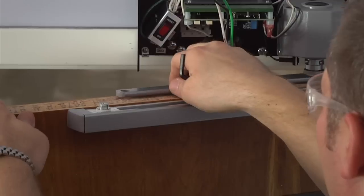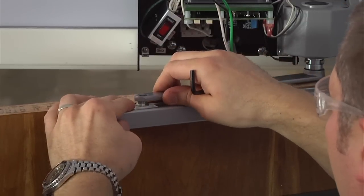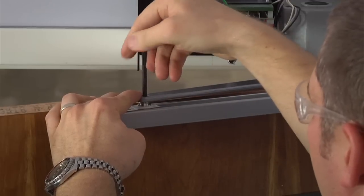Next, attach the arm to the track slider using the allen wrench. Turn this screw counterclockwise to tighten.